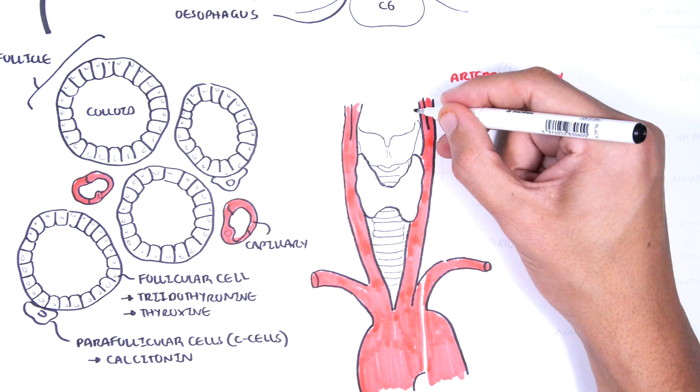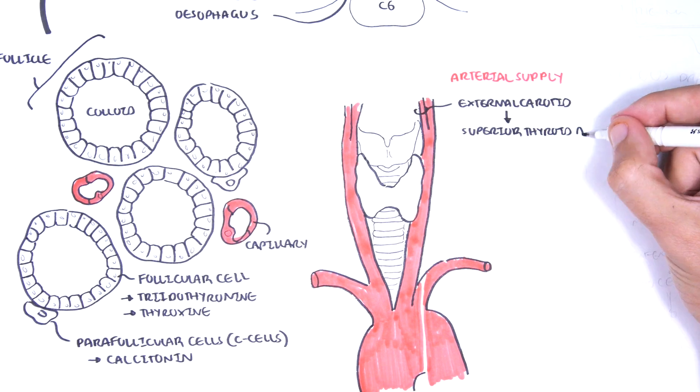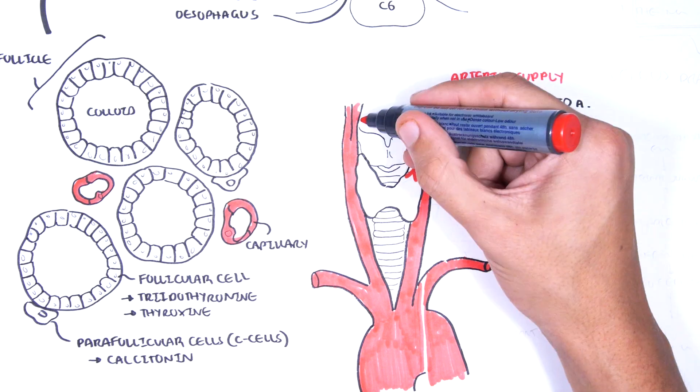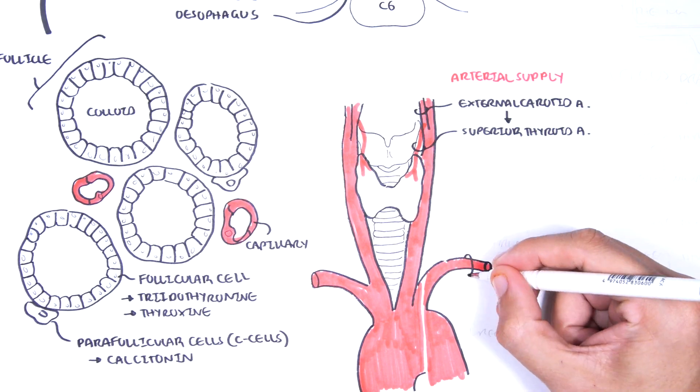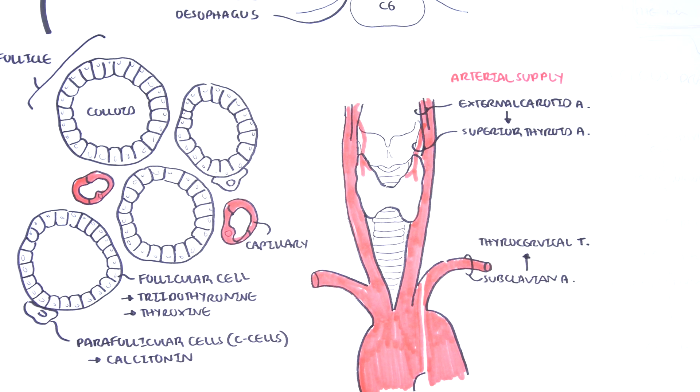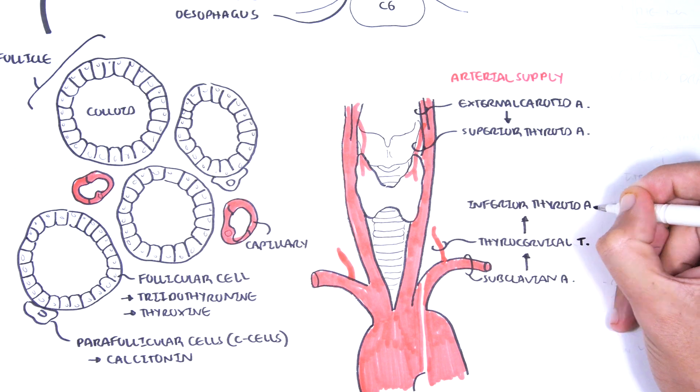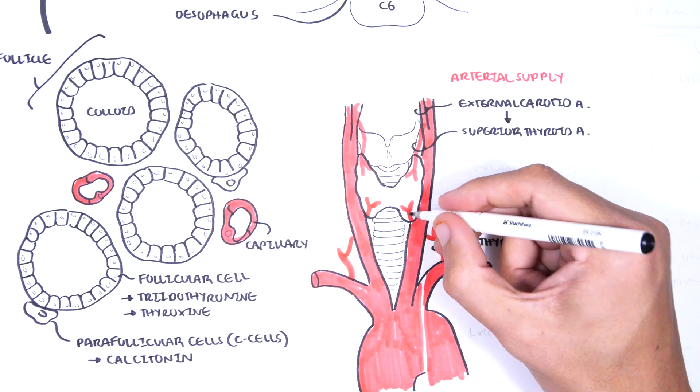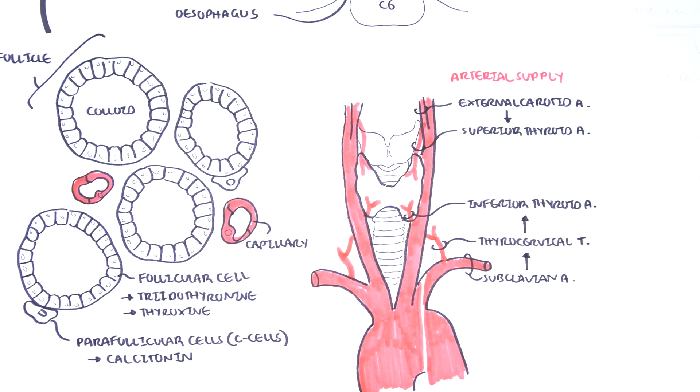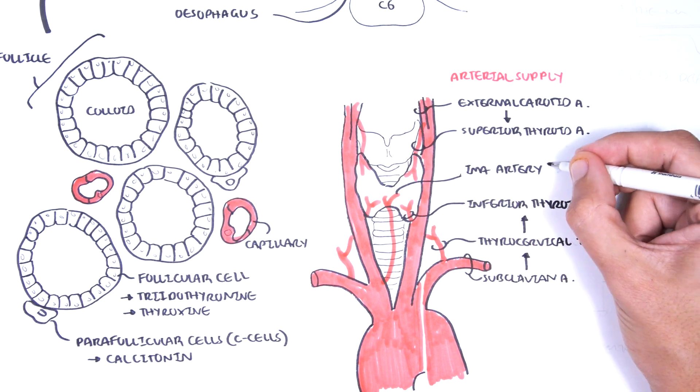The arteries supplying the thyroid gland include the branch of the external carotid artery, the superior thyroid artery, a branch of the subclavian artery which is the thyrocervical trunk and another branch from the thyrocervical trunk, the inferior thyroid artery, and then we have the IMA artery which is present in 3% of people and a branch of the brachiocephalic artery.